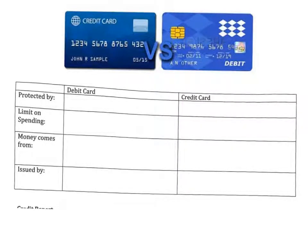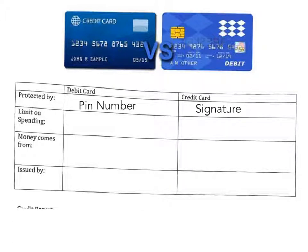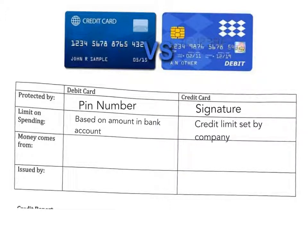A debit card is protected by a PIN number, which anyone will use when they go to scan their card. A credit card is protected by the signature of the person. The limit on spending on your debit card is based on the money in your bank account, and the limit on a credit card is a maximum limit set by the credit card company.